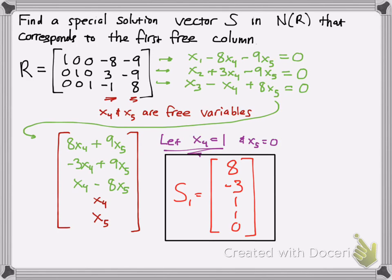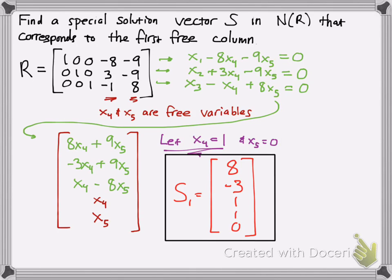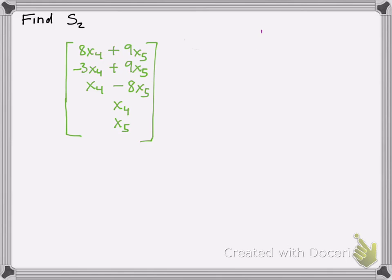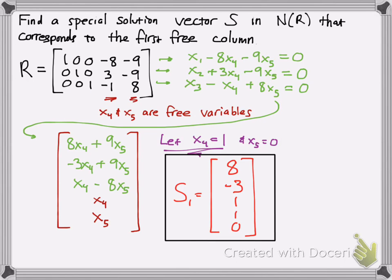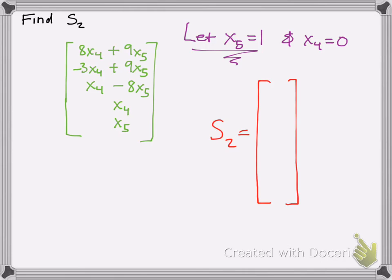Now, what if I asked you to find it for the second free column? Remember, this is what we solved for back here — our outline for finding the special solutions. Now we're going for the second free column, so we're going to let x5 equal to 1 — that's the second free variable, second free column. We set all remaining free variables equal to 0; in this case, it's only x4. You plug the numbers into the matrix and get: 9 times 1 is 9; 9 times 1 is 9 again; negative 8 times 1 is negative 8; x4 is 0; x5 is 1. And that's your special solution for the second free column.